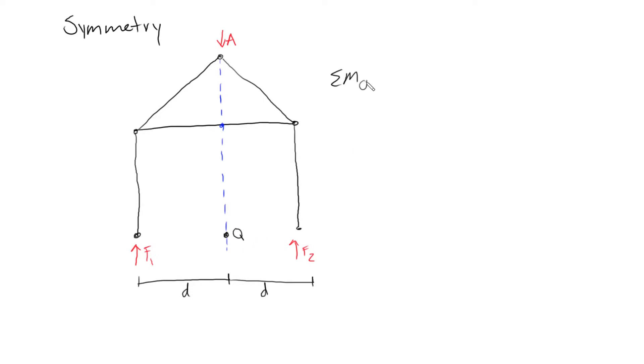We could say that the sum of the moments about, let's say this point Q—we'll define this side as positive—we could say that -F1*d + F2*d, and for this structure to be in equilibrium, we set it equal to zero.